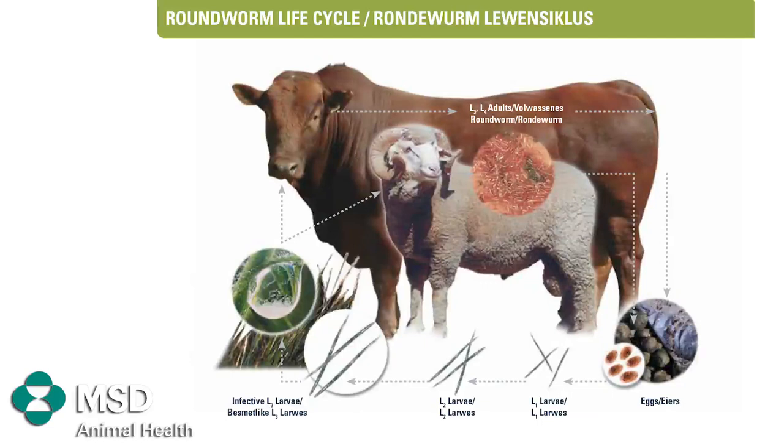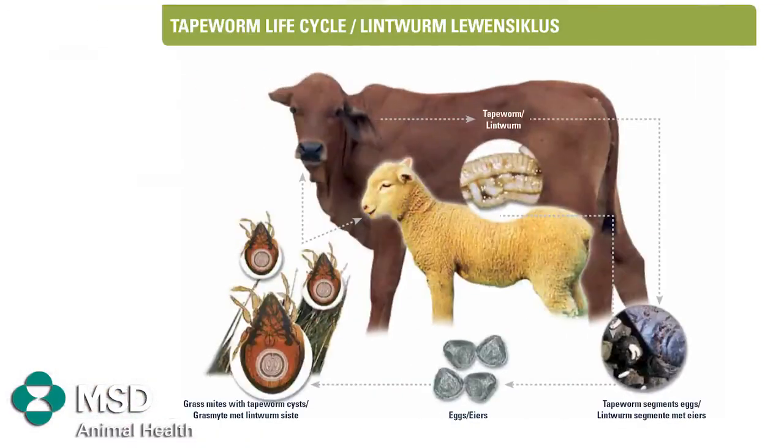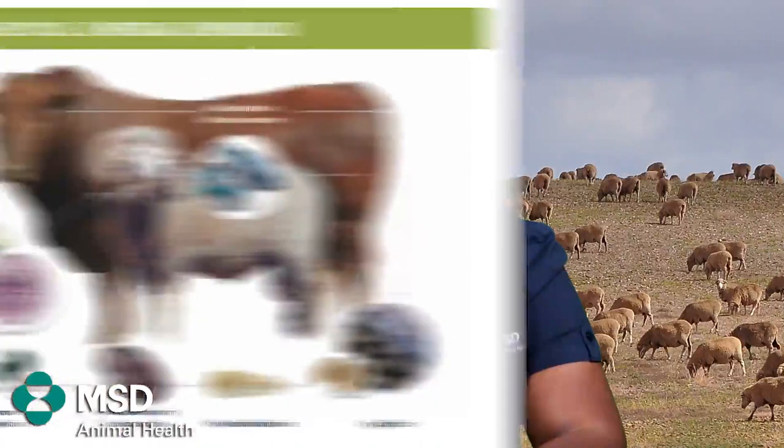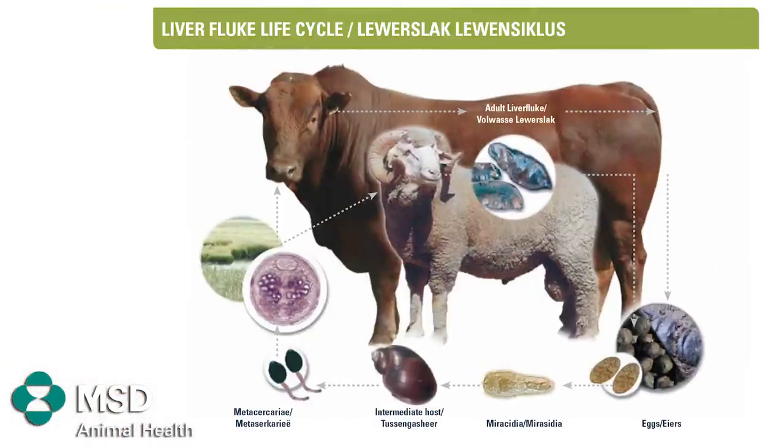As farmers you need to understand the life cycle of these worms, taking into account the intermediate hosts that play a role in their life cycle. For example, grass mites for the tapeworms and freshwater snails for your flukes. You also need to understand the active ingredients in the medications you will be using for the control of worms, because some ingredients will only act against the immature stages of the worm, and other ingredients will only act against the adult stages.